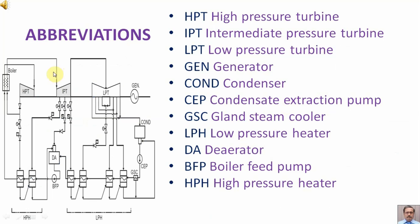Abbreviations used: HPT stands for high pressure turbine; IPT stands for intermediate pressure turbine; LPT stands for low pressure turbine; GEN stands for generator; COND stands for condenser; CEP stands for condensate extraction pump; GSC stands for gland steam cooler; LPH stands for low pressure heater; DA stands for deaerator; BFP stands for boiler feed pump; HPH stands for high pressure heater.